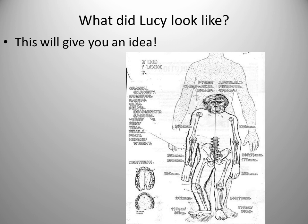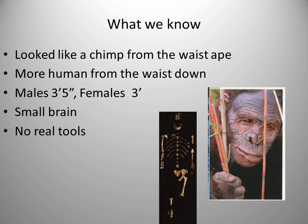With Australopithecus, you could also see an intermediate step between an ape's dentition and a human's dentition. You had reduced canines — the canines were still there — and a diastema, but it was not nearly as pronounced. Males were about 3'5", females 3'4", but with a small brain and no real tools. What you're seeing are the actual bones found of Lucy versus the TV version of what she might have looked like.